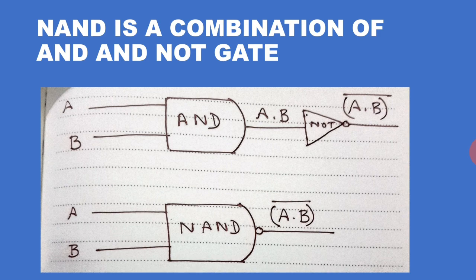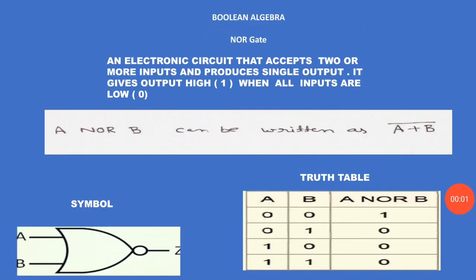One more thing — NAND and NOR are both known as universal gates. Why that is will be discussed in another video later. NOR gate — an electronic circuit that accepts two or more inputs and produces a single output. It gives output one or high when all inputs are low or zero. You can observe this in the truth table as well.